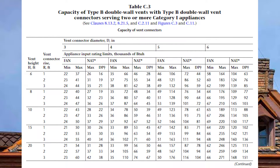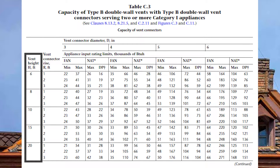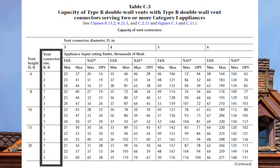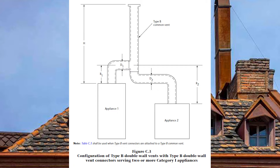Tables C3 and C4 are laid out the exact same way and are broken down into two parts. The first part is entitled capacity of vent connectors — we use this area to size our vent connectors. In the far left column we see vent height in feet. Moving slightly to the right we see the vent connector rise. This is different from the last video where we had the vent connector lateral — this is how much it rises before it connects into the common vent.